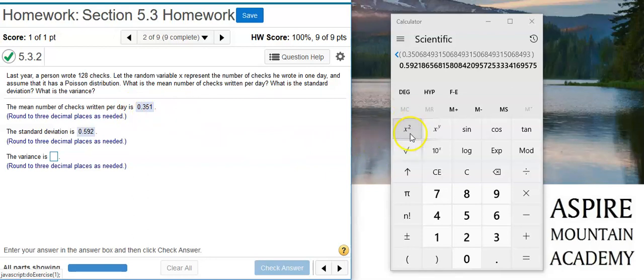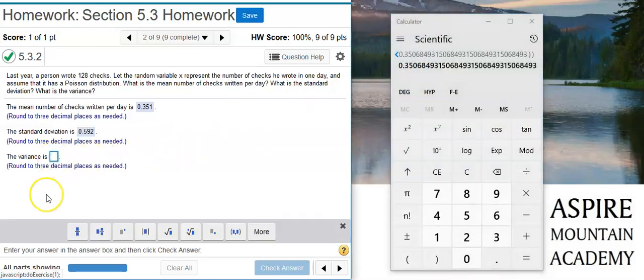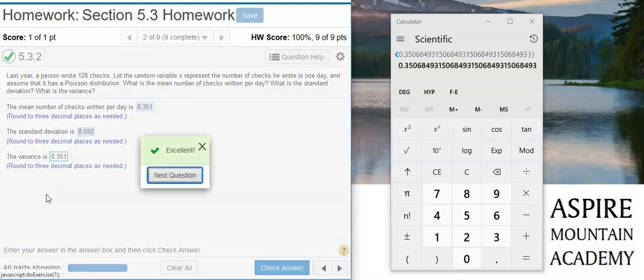If you don't believe me, I'll just go ahead and square the number left here in my calculator, and you see I got the number I started off with. So the variance is going to be equal to the mean for a Poisson distribution. Again, I'm asked to round to three decimal places. Excellent!